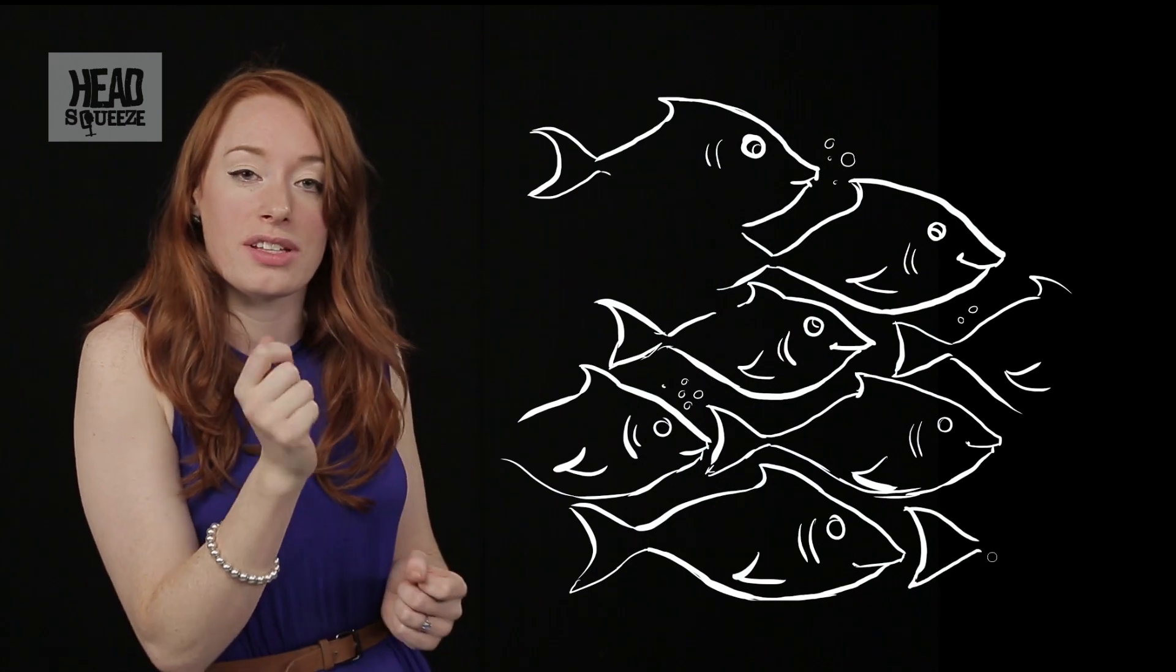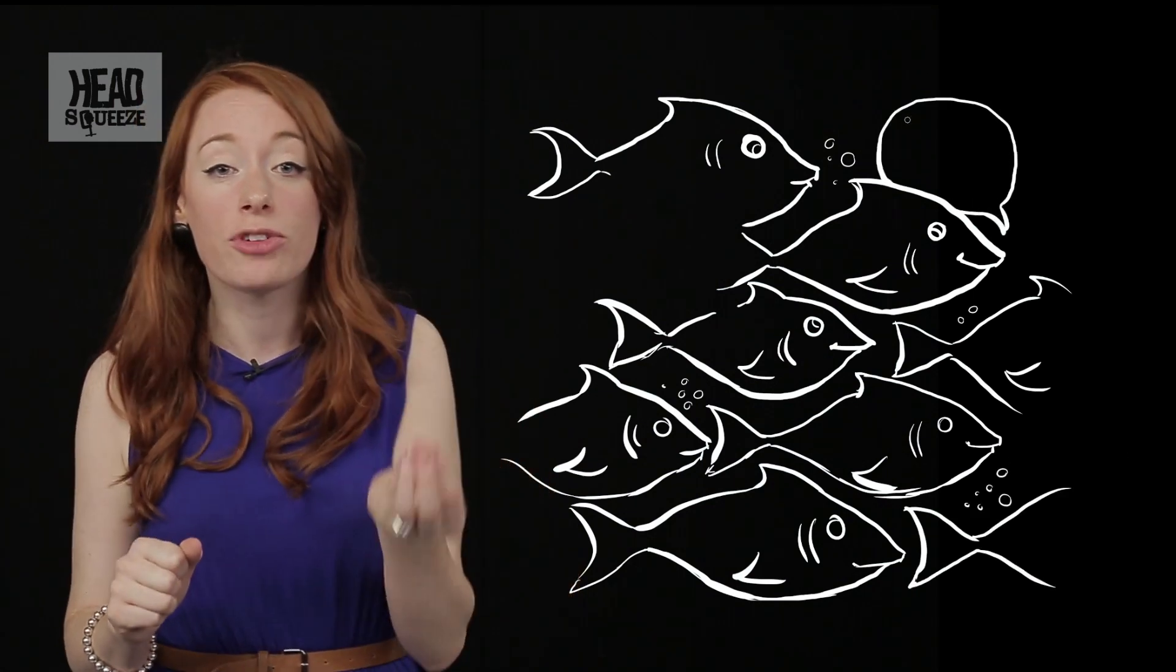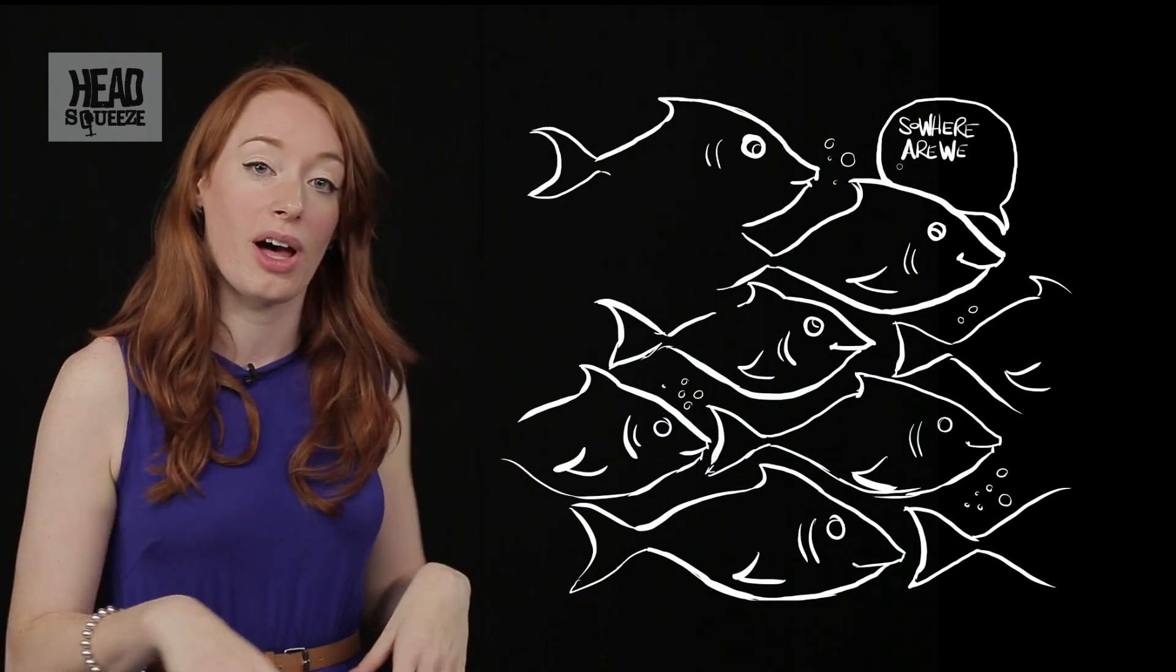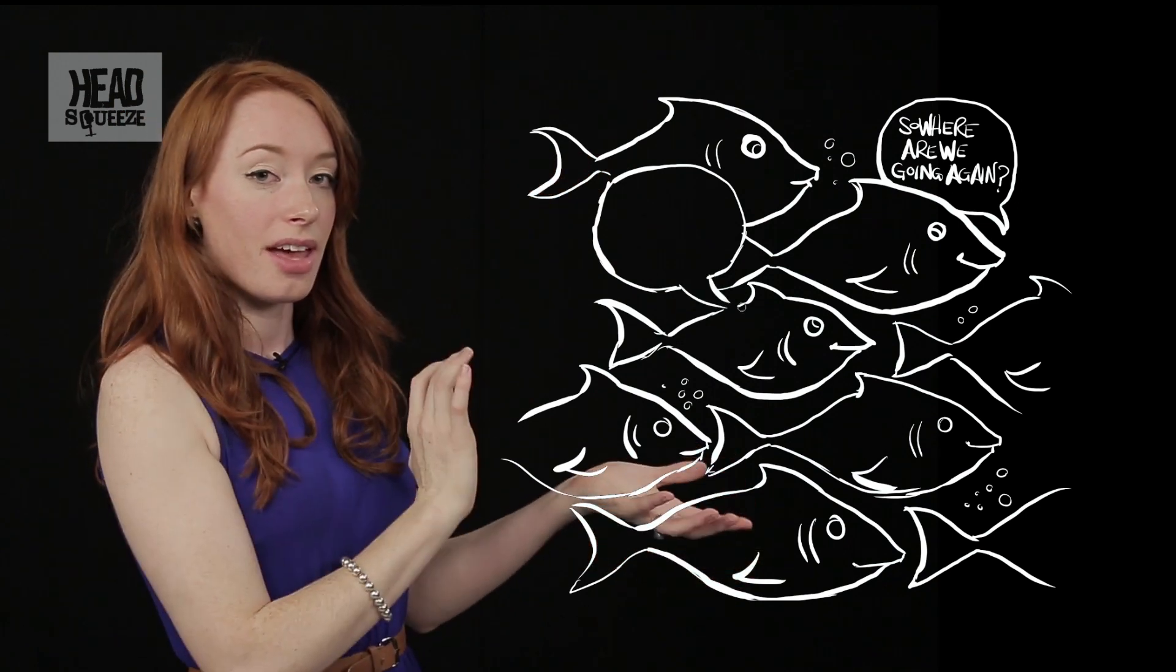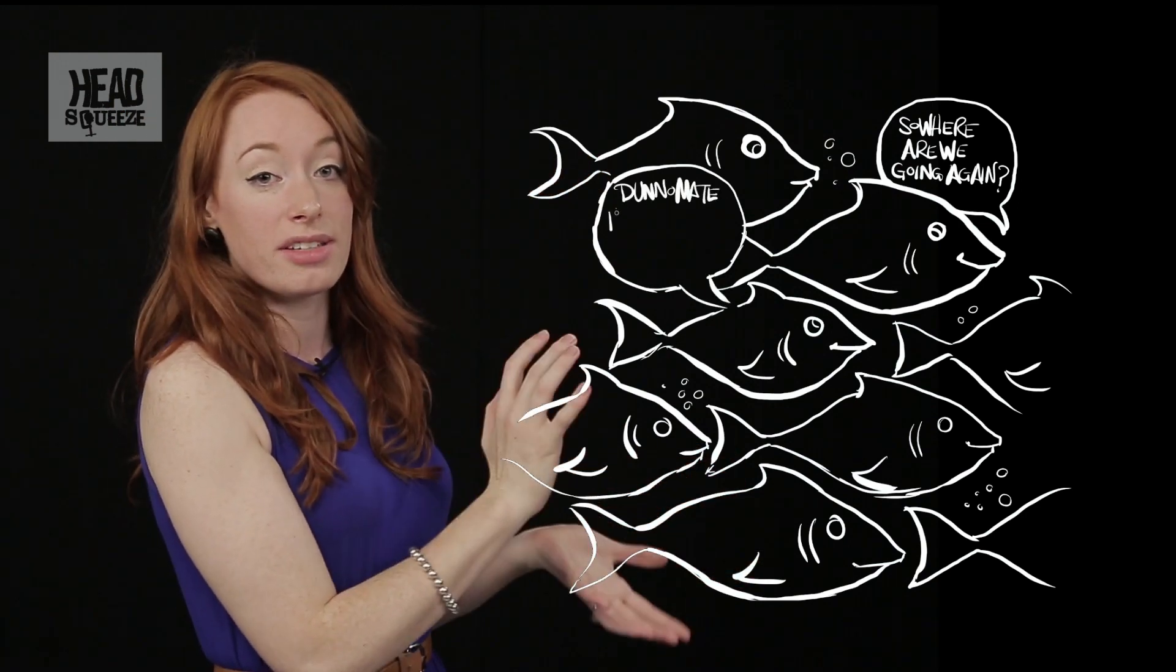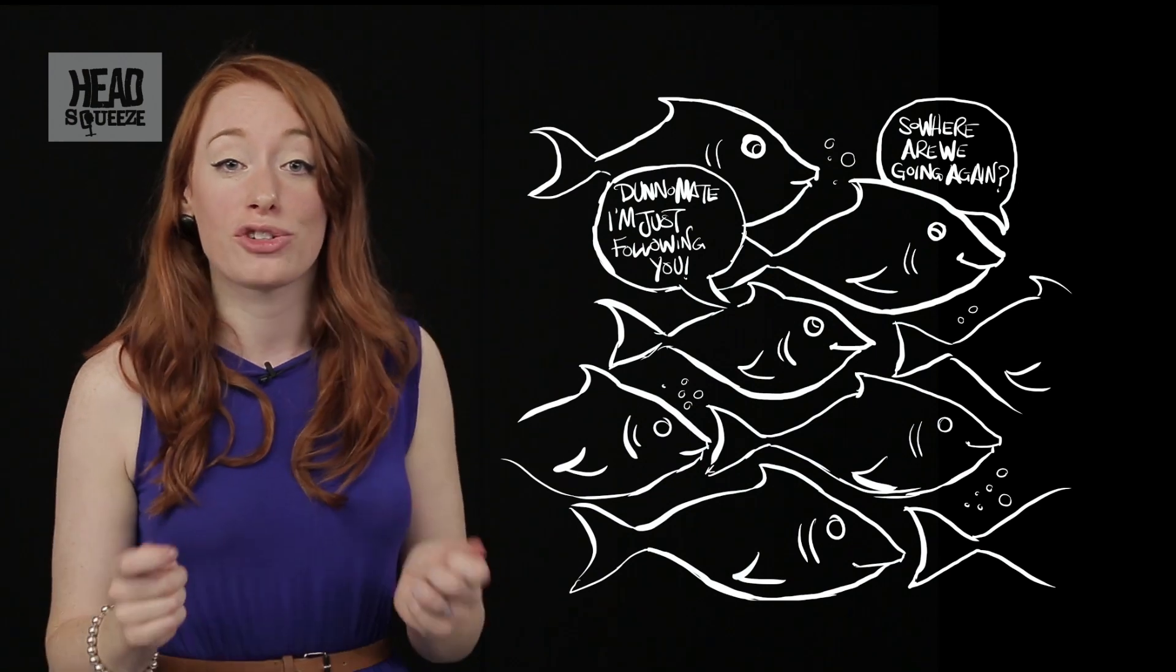Now just these very simple interactions between neighbouring fish mean that every fish is both influencing and being influenced by all other fish performing together to create one giant predator avoiding team and in maths this is what's known as an emergent system.